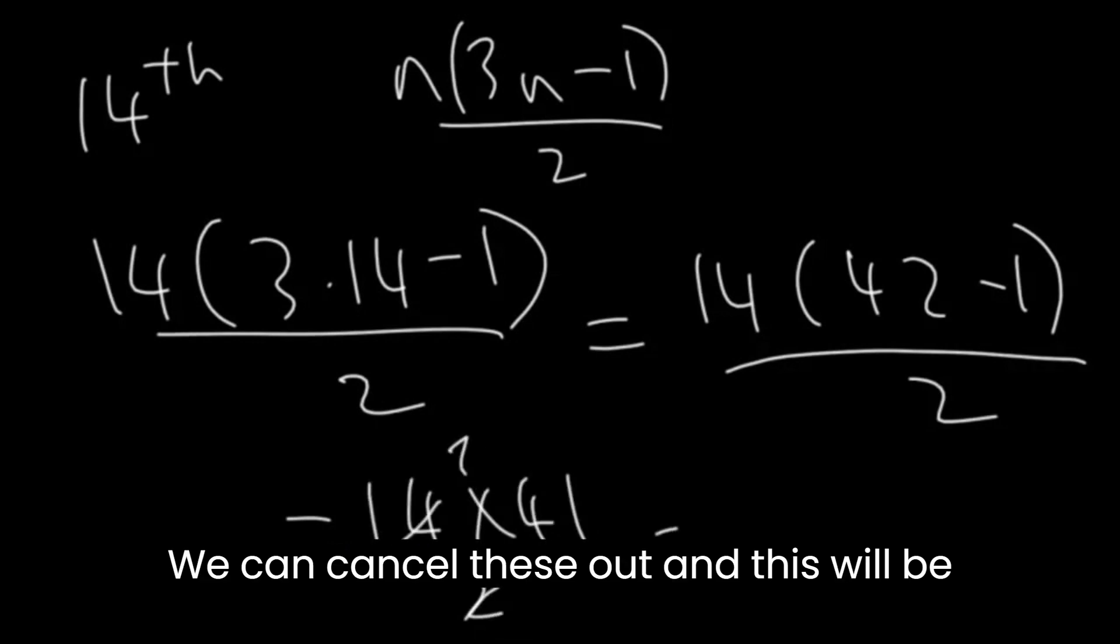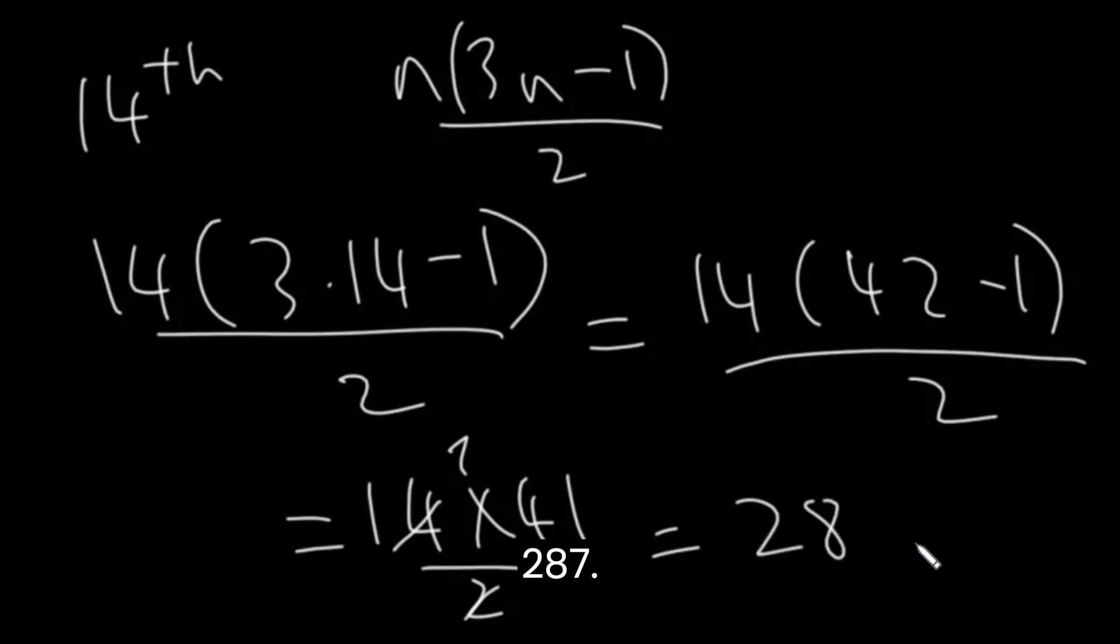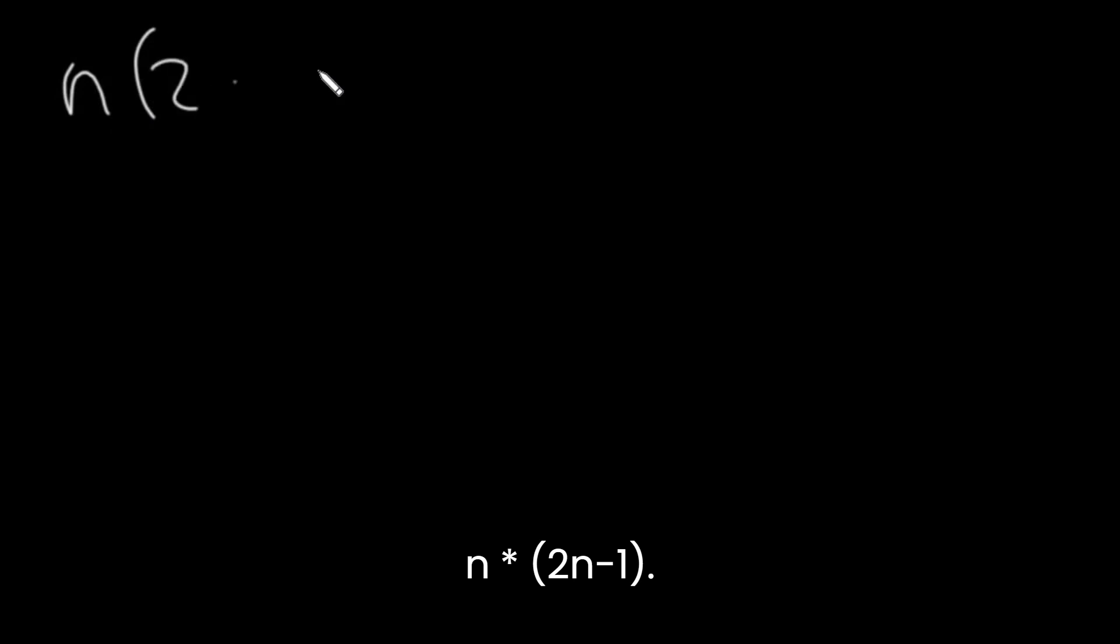We can cancel these out, and this will be 287. The formula for hexagonal numbers is n times 2n minus 1.